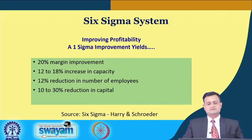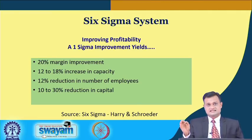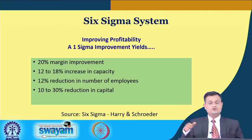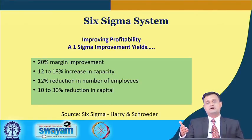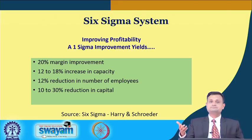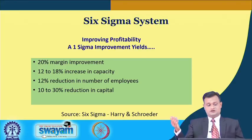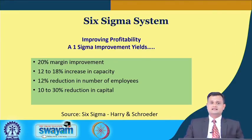Six Sigma is a system for improving profitability. One sigma improvement from your present status can yield a 20 percent margin improvement, 12–18 percent increase in capacity utilization, and 12 percent reduction in number of employees — not as a strategy for layoffs, but to redeploy people to better functions where their competency brings more value for the company. There is also a 10–30 percent reduction in capital. These published results motivate companies to opt for Six Sigma.